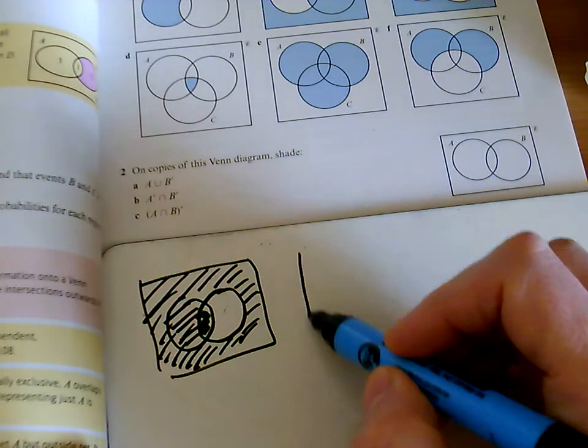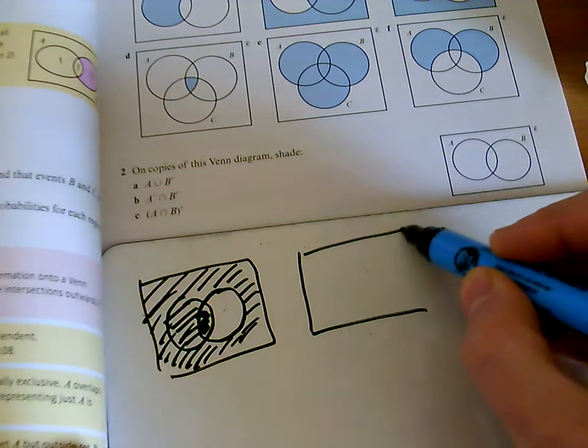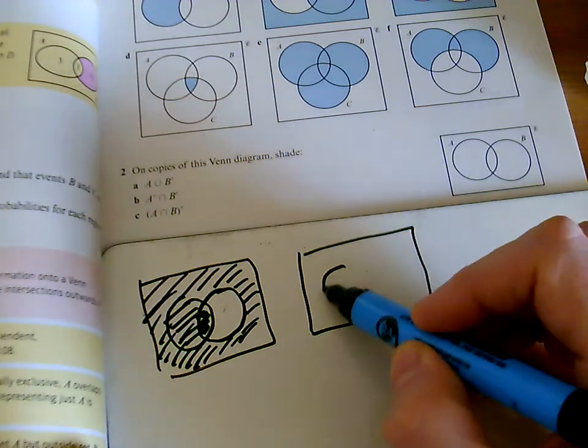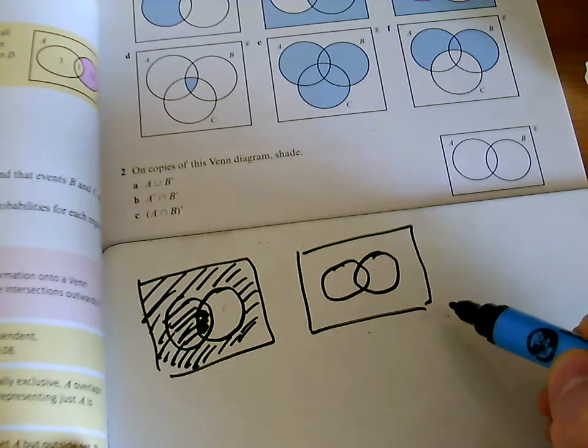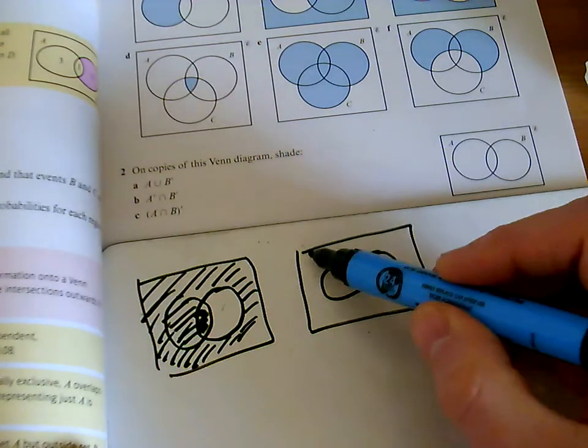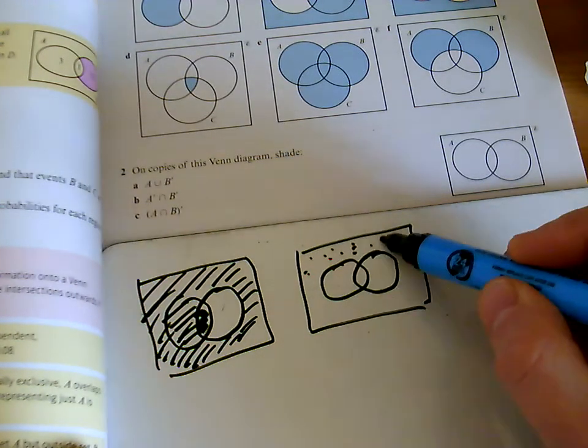But the second one, we want to do an intersection. So for an intersection, I need to colour in basically in two different shades. So first of all, what's not in A? So I'll put dots on everything that's not in A.